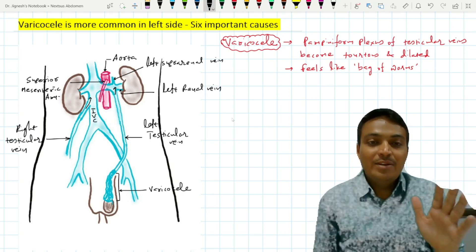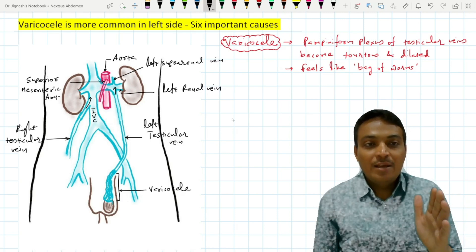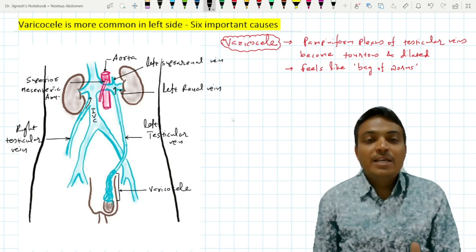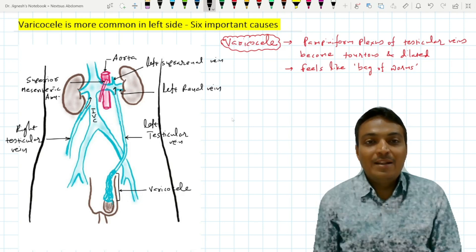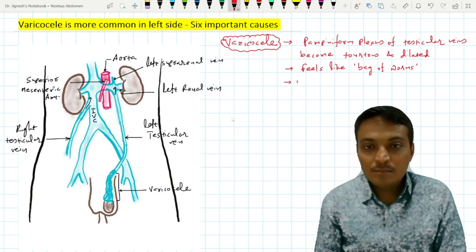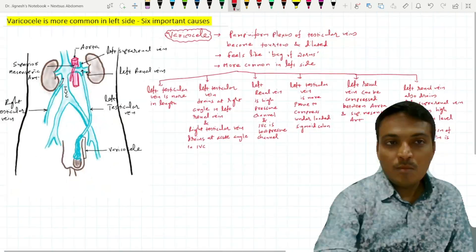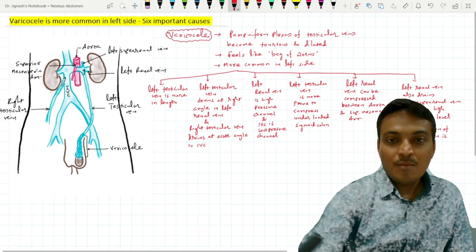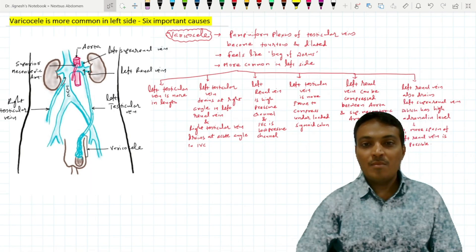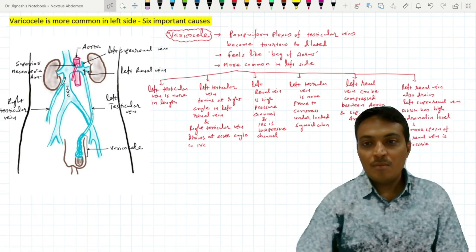So these are the six reasons why varicocele is more common on the left side.